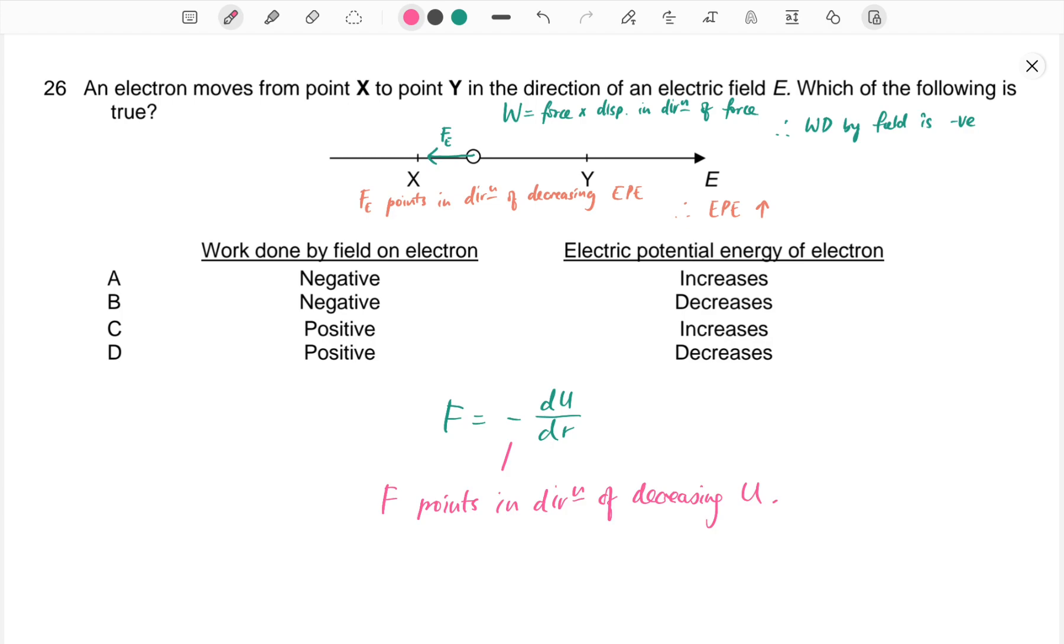Since the force is pointing to the left, the electron as it moves towards the right will move in the direction of increasing EPE. Because left is the direction of decreasing EPE, right is increasing EPE. So EPE will increase.